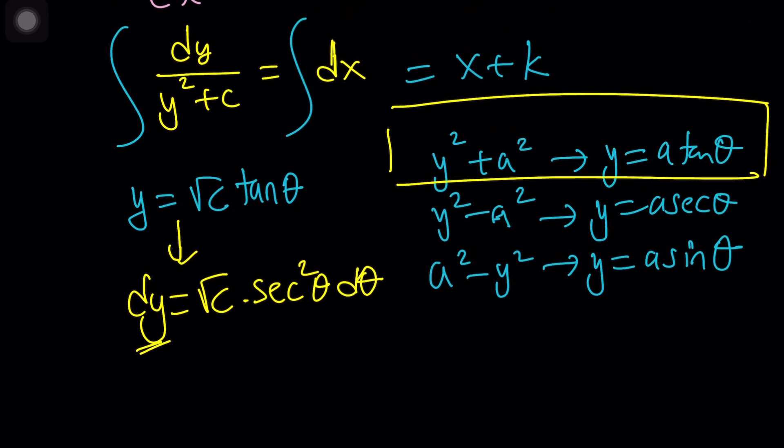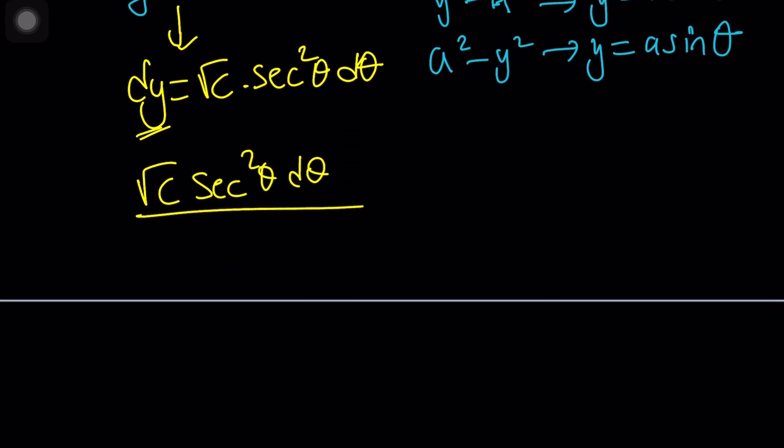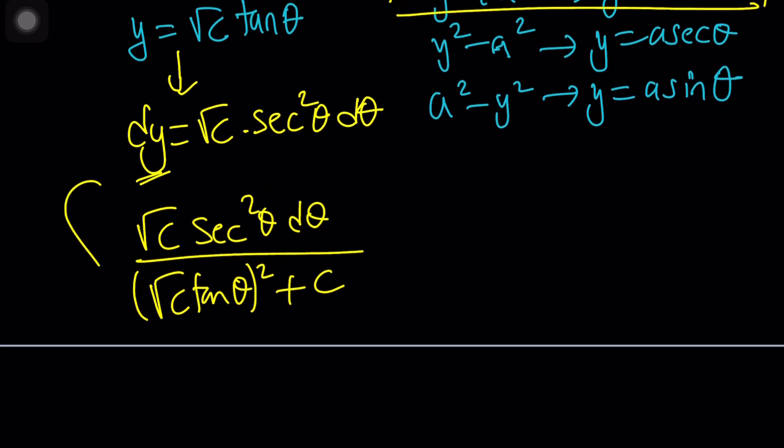Let's go ahead and replace everything with what it is. For example, dy would be square root of c, secant squared theta, d theta, divided by y squared plus c. That would be y is root c, tangent theta. I need to square that, plus c. Great. Let's simplify this expression.